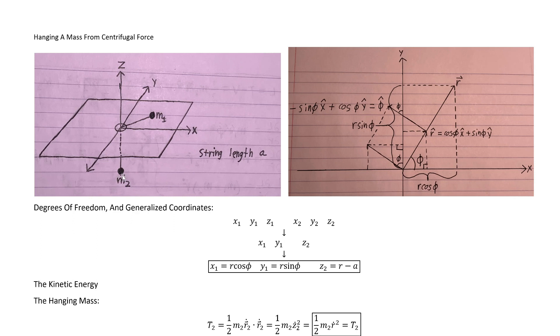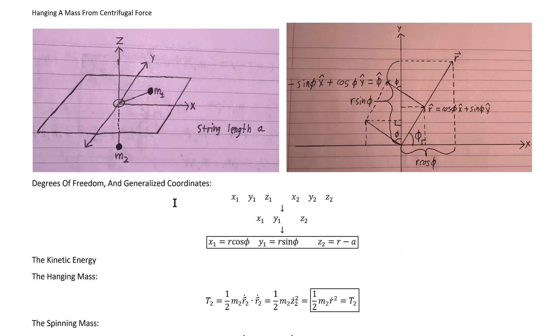We're also going to assume that the only force other than the string tension acting on this mass 2 here is gravity pointing downwards. Meaning we only expect it to be able to move up and down. We don't expect any movement in the X or Y direction. So that's our system.